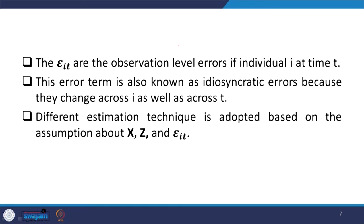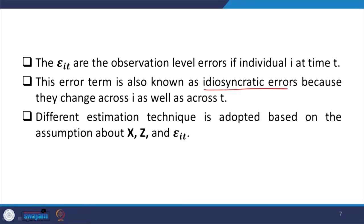The error term varies over the individual as well as over time. This error term is also known as the idiosyncratic error — there is randomness attached with the error term, stochasticity across individuals, across observations, and also across the time variable. These are called idiosyncratic errors because they change across i and across t. Different estimation techniques are adopted based on assumptions about X, Z, and the error term.